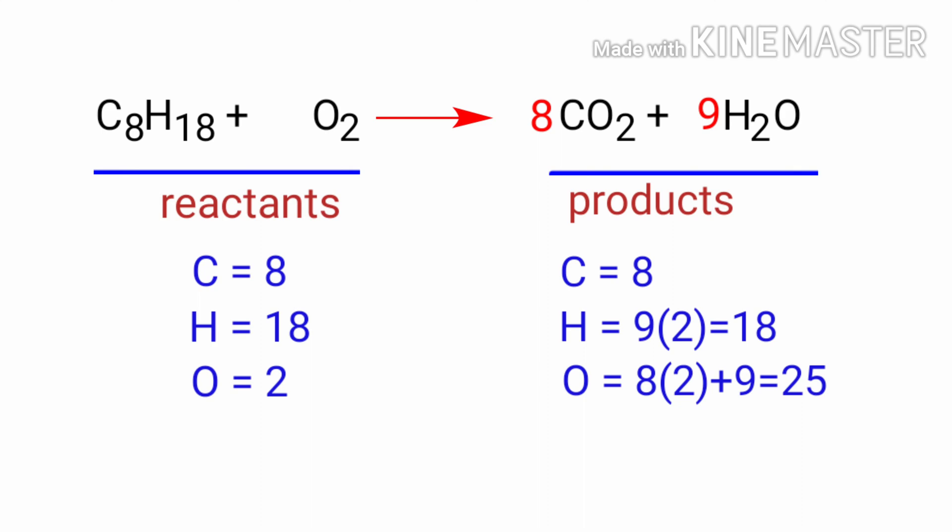Now we need to balance the oxygen atoms. To do this, we need to put a coefficient of 25/2 in front of O2. In this equation, 25/2 is a rational number. We don't use rational numbers for molecules. So to get whole numbers, we need to multiply the equation by a coefficient of 2.